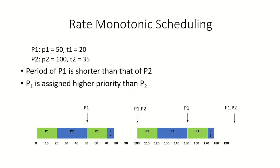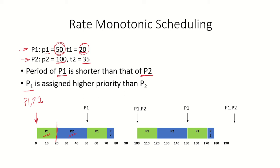Now let's see how rate monotonic scheduling is done. For this example, P1 has period 50 and burst time 20; P2 has period 100 and burst time 35. Since P1's period is shorter than P2's, P1 is assigned a higher priority. Assuming both P1 and P2 arrive at time 0, we give the processor to P1 first. P1 runs for 20 time units and releases the CPU, after which the processor is given to P2.